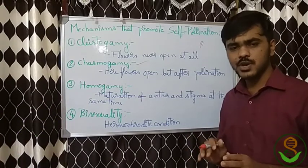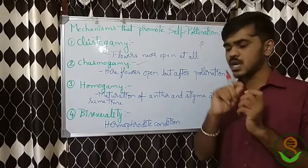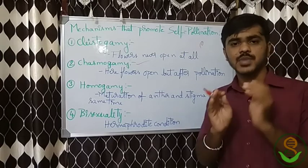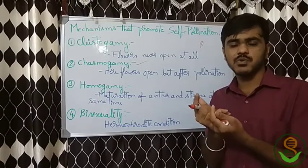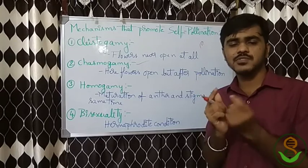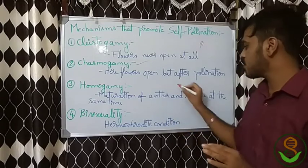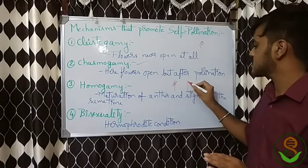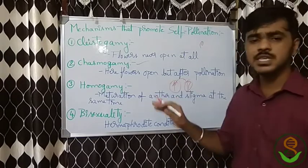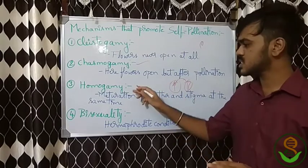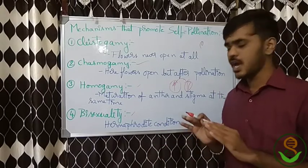Another mechanism that favors self-pollination is homogamy — the maturation of anther and stigma at the same time. For transfer from anther to stigma, if the anther matures at the proper time and simultaneously the stigma is receptive, then maximum transfer of pollen grains will take place. When the maturation of anther and stigma occurs at the same time, the flower favors self-pollination; such a condition is called homogamy.